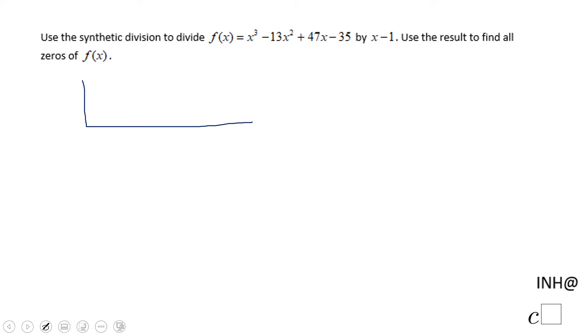We have f of x which is x cubed, or 1x cubed, minus 13x squared, plus 47x, minus 35, divided by x minus 1.